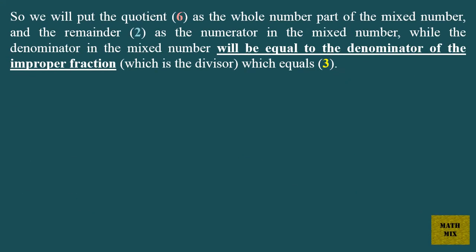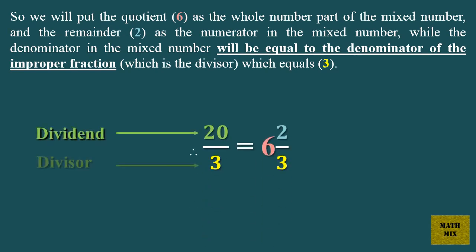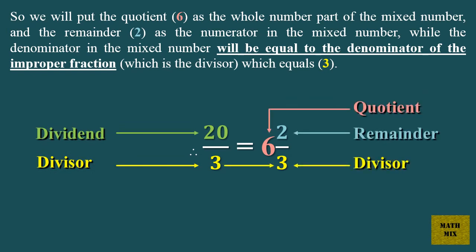So we will put the quotient, 6, as the whole number part of the mixed number, and the remainder, 2, as the numerator in the mixed number. While the denominator in the mixed number will be equal to the denominator of the improper fraction, which is the divisor, which equals 3. Therefore, 20 over 3 equals 6 and 2 thirds.